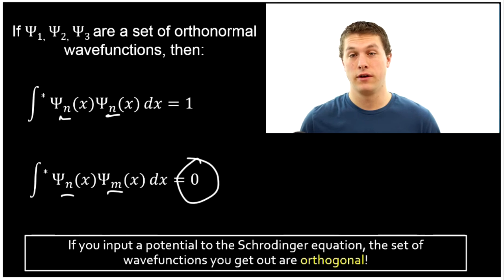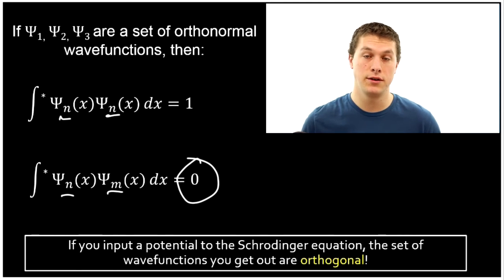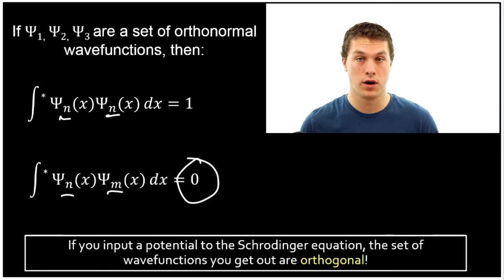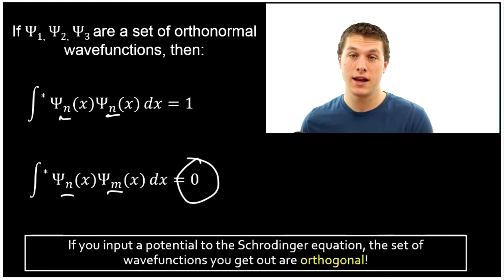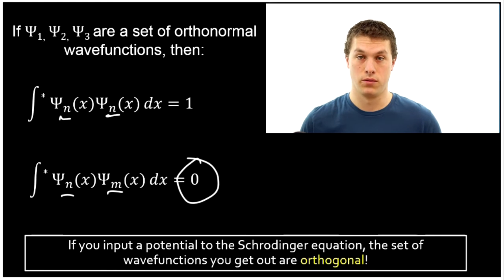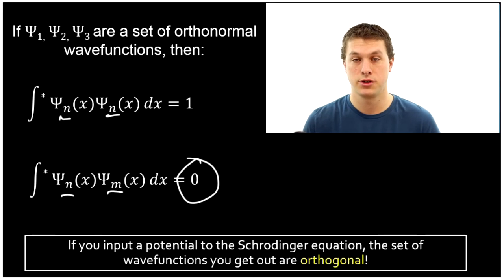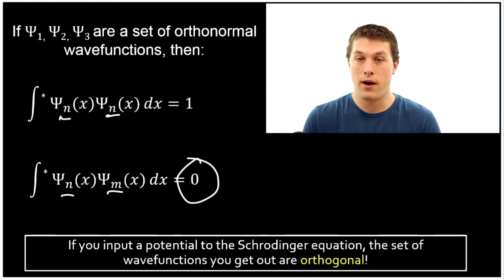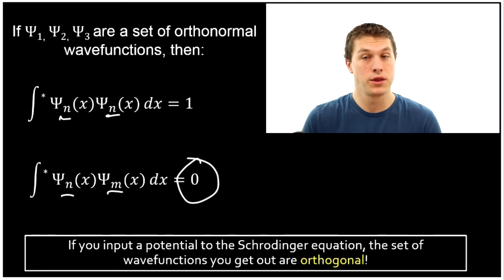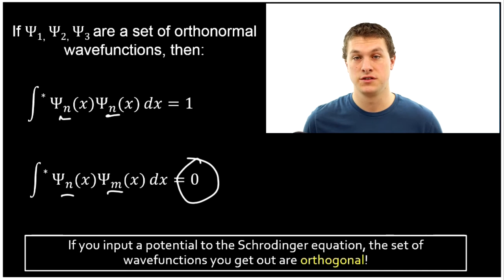So if we have a set of wave functions that are ortho-normal, when we integrate a wave function times itself we get one — that's the normalized part. If we integrate a wave function times any other wave function that's not itself, we get zero. It turns out this is a really important property, because if you look at solutions to the Schrödinger equation — you put in a potential to the Schrödinger equation and you get out wave functions — that set of wave functions will all be orthogonal with respect to each other. So this turns out to be very common in quantum mechanics, and that's why it's so useful.